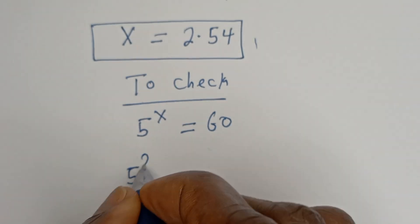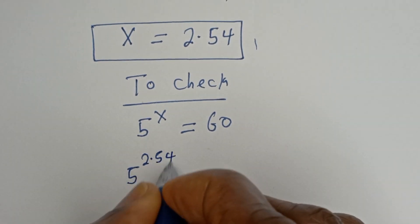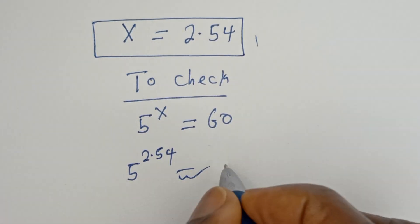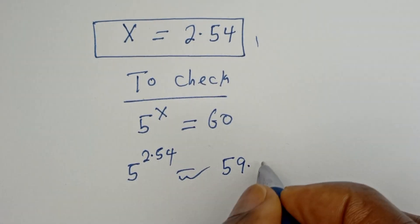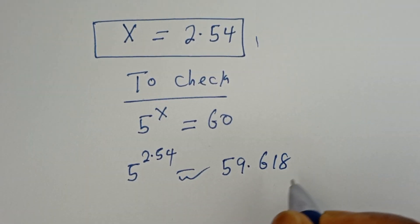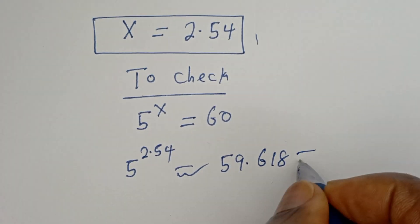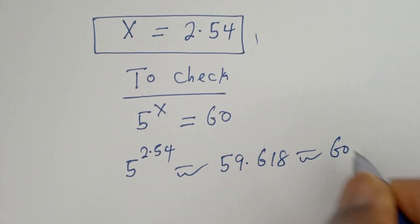we have 5 to the power of 2.54 is equal to 59.618, which is approximately 60.